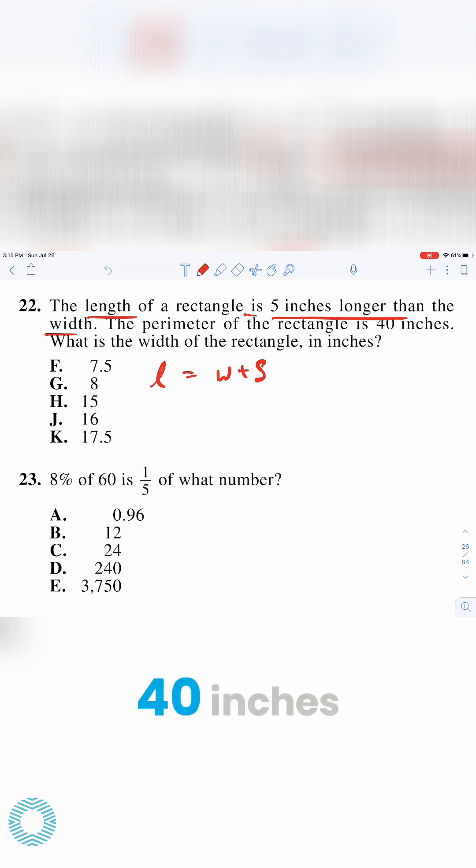The perimeter of the rectangle is 40 inches. Perimeter, okay, how do we represent the perimeter? I could just say P equals 40, but now we have three variables, L, W, and P, and we don't really know how to solve for them because we only have two equations.